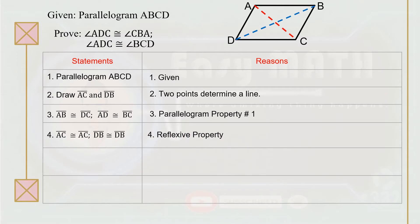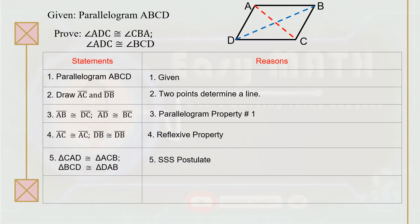Statement number four: the diagonals are congruent to themselves — segment AC is congruent to segment AC, and segment DB is congruent to segment DB, because of the reflexive property. Now we can form two pairs of congruent triangles. Triangle CAD is congruent to triangle ACB, and triangle BCD is congruent to triangle DAB, because of the side-side-side postulate.